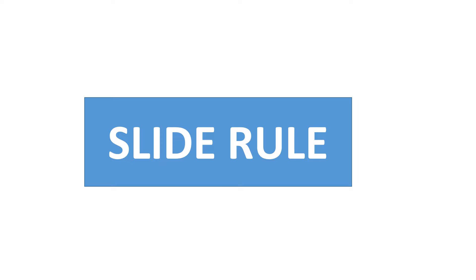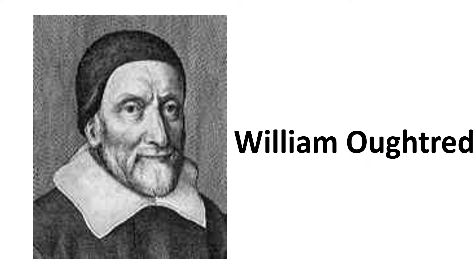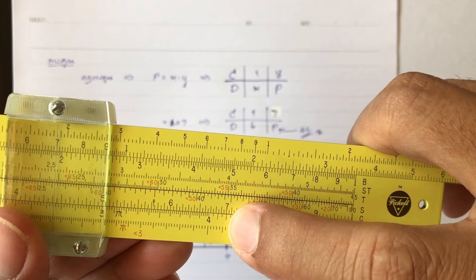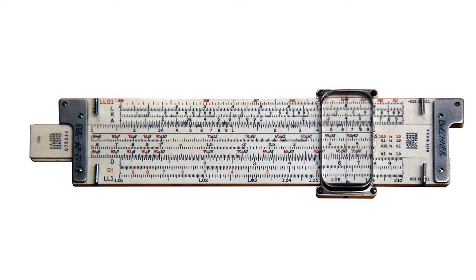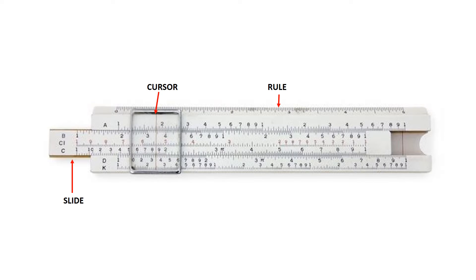English mathematician William Morta developed a device called Slide Rule in 1622, based on the idea of logarithm. It was very useful for solving problems that involved multiplications and divisions. It has three parts: slide, rule, and a transparent sliding cursor.